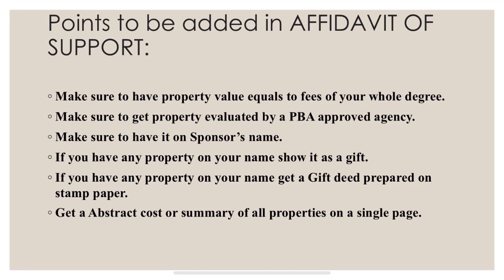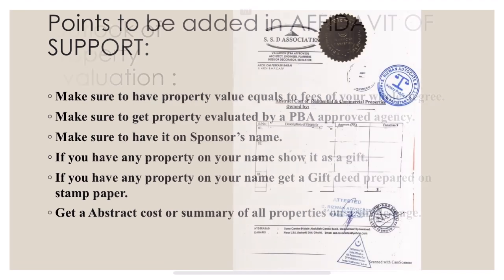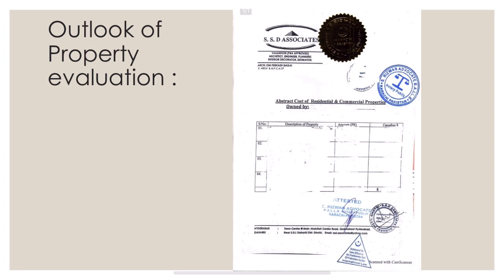Get a strict cost summary of all properties on a single page. When you have a property evaluation, it can run 4 to 5 pages per property — you don't have to submit all of that with your visa application. Summarize everything on one page. I will show you an example — this is the outlook of a property evaluation document, with some information hidden for privacy.